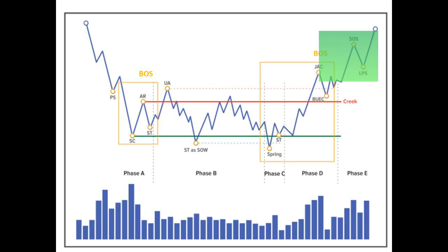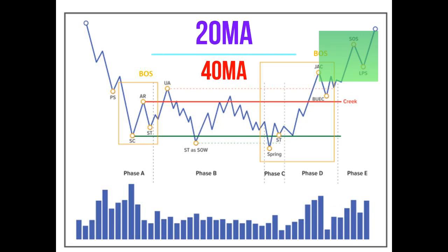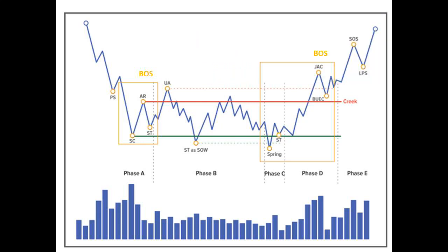Phase E is the last phase — the markup phase, with successful signs of strength and last points of support generating a dynamic of rising highs and lows. In Phase E, the stock moves up and should be followed using a pullback strategy, whereby the 20-period moving average and 40-period moving average move upward, with the 20 MA always above the 40 MA.